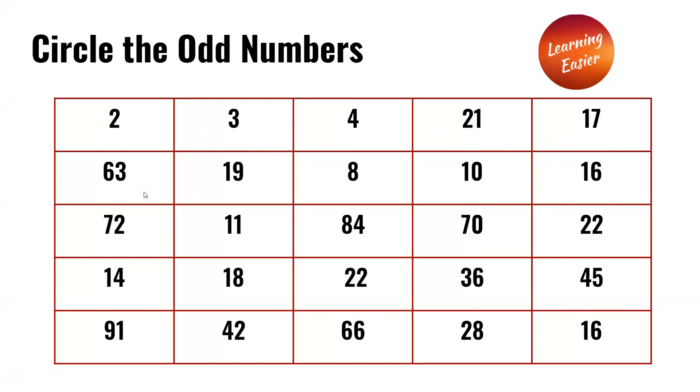Next row we have 63, 19, 8, 10, and 16. The odd numbers here are 63 and 19.